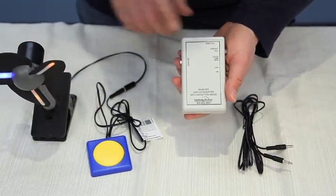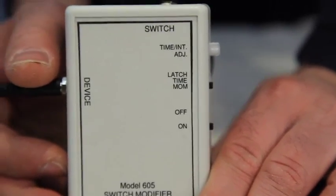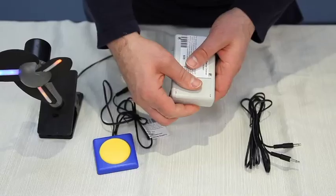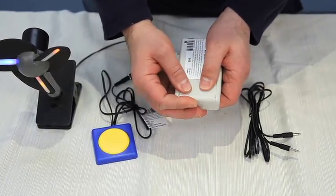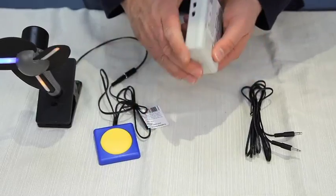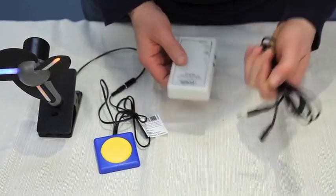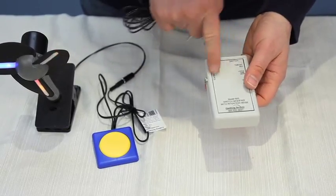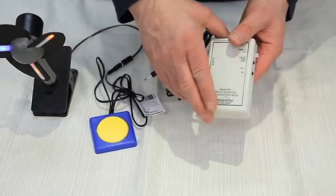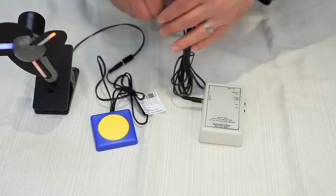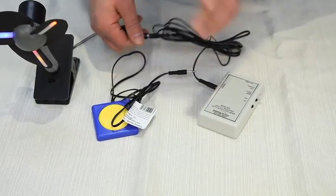This is called a switch modifier. It's item or catalog number 605 in our catalog and on our website. This takes a 9 volt battery, an alkaline battery, and what this does is it modifies what the switch does to your toy or device. It comes with a double-ended cable which you're going to need. These are all labeled your input jacks. There's two jacks on here. You plug your double-ended cable into the jack marked device. Okay then the other end of that cable is going to plug into your battery interrupter.